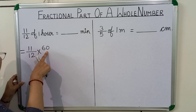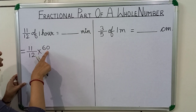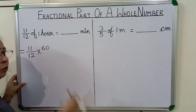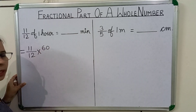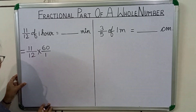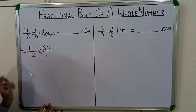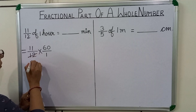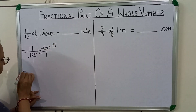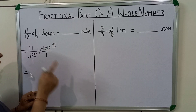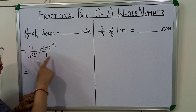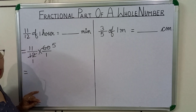Why have we written 60 here? Because 1 hour is equal to 60 minutes and we want the answer in minutes. We will write 1 in the denominator. 12 cancels into 60, five times.